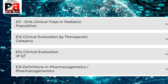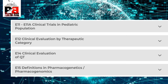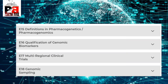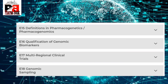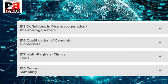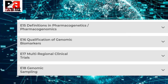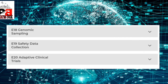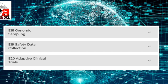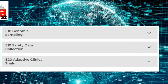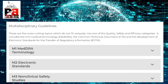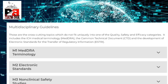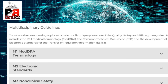Continuing efficacy guidelines: E12 Clinical Evaluation by Therapeutic Category, E14 Clinical Evaluation of QT interval. Note that E13 is obsoleted. E15 Definitions in Pharmacogenetics and Pharmacogenomics, E16 Qualification of Genomic Biomarkers, E17 Multi-regional Clinical Trials, E18 Genomic Sampling, E19 Safety Data Collection, E20 Adaptive Clinical Trials. Multidisciplinary guidelines are cross-cutting topics not related to Quality, Safety, or Efficacy categories alone.